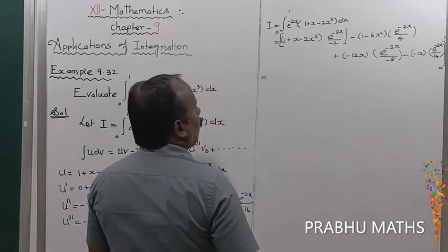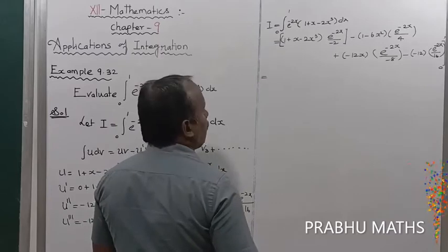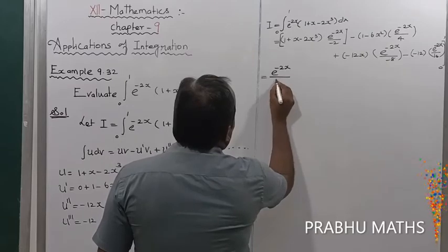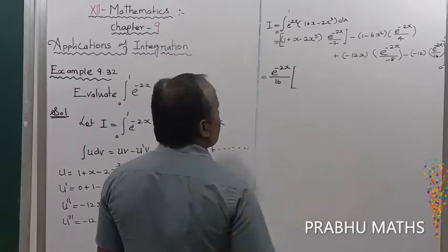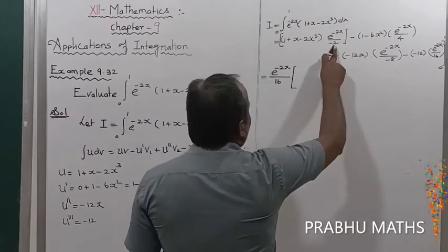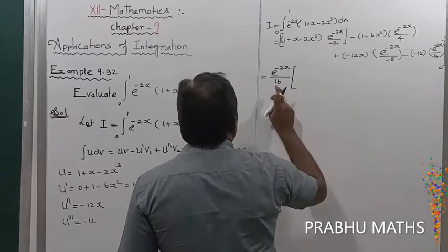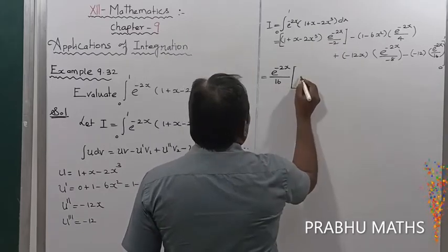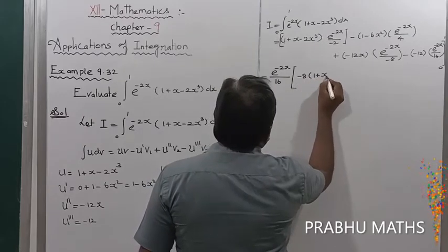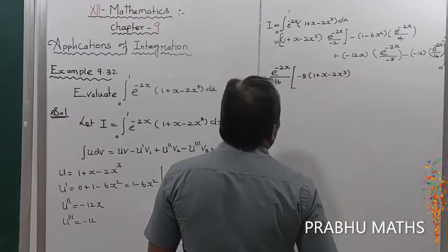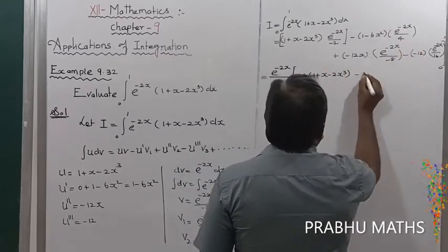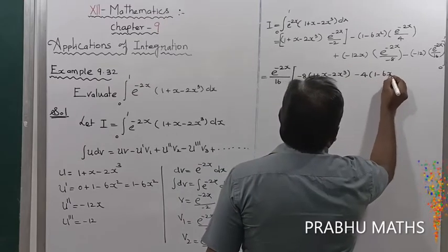Taking the common factor e^(-2x) / 16 outside: the denominator common value is 16. So the first term becomes -8 · (1 + x - 2x³), and the second term gives -4 · (1 - 6x²).